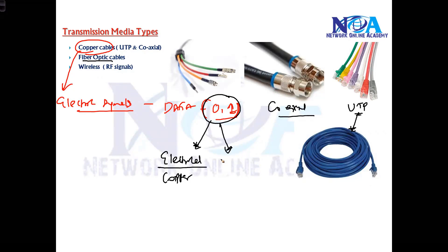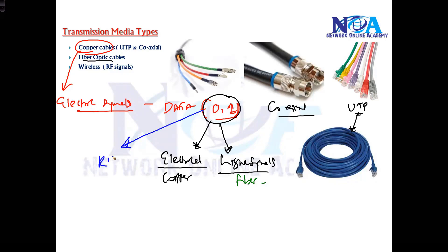Information can also travel in the form of light signals. Fiber optic cables send information in the form of light signals. You can also send information without a wire in the form of radio frequency signals — that's wireless LAN. The frequencies used in mobile phones or other wireless devices will vary, so wireless is different.